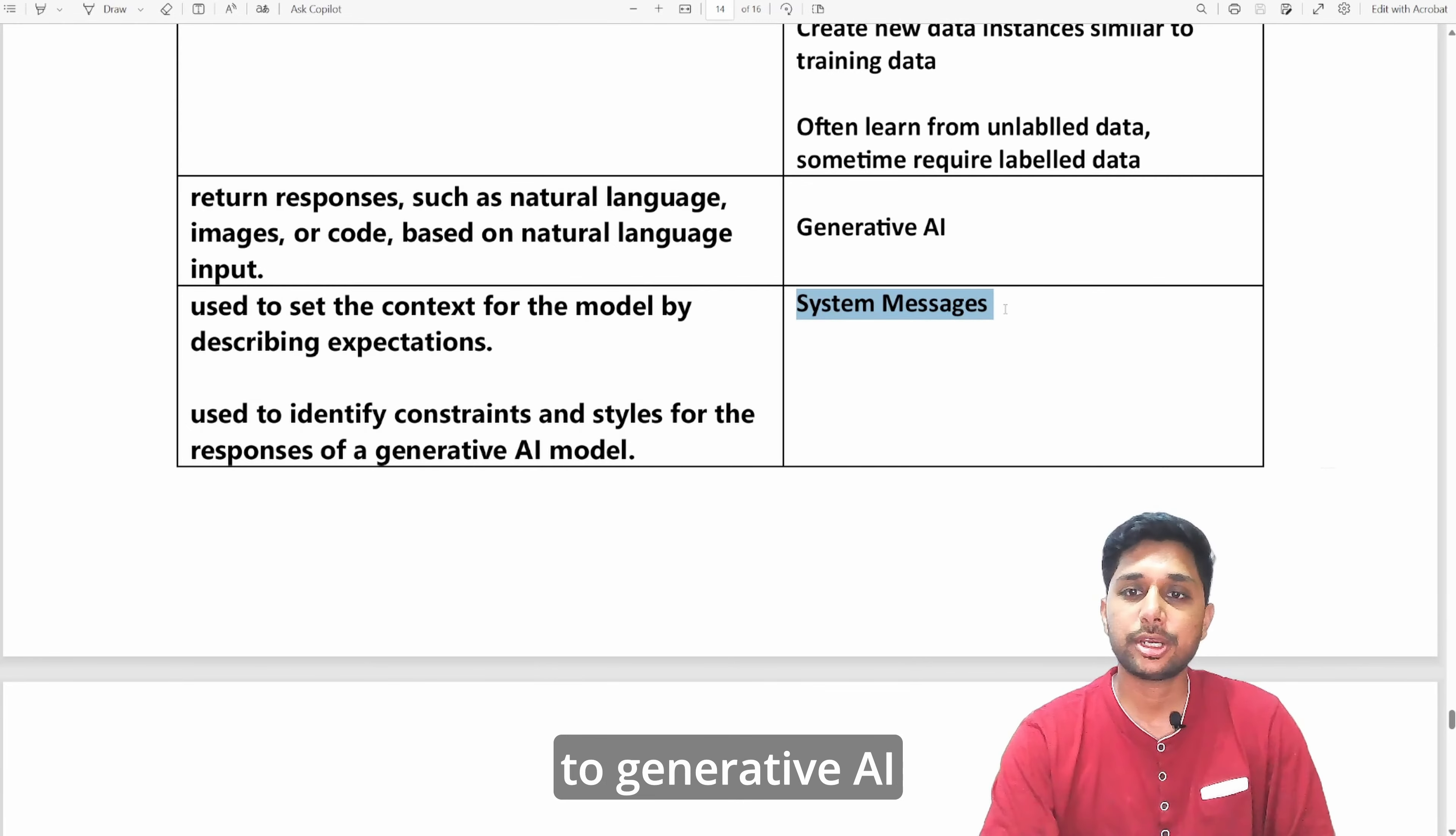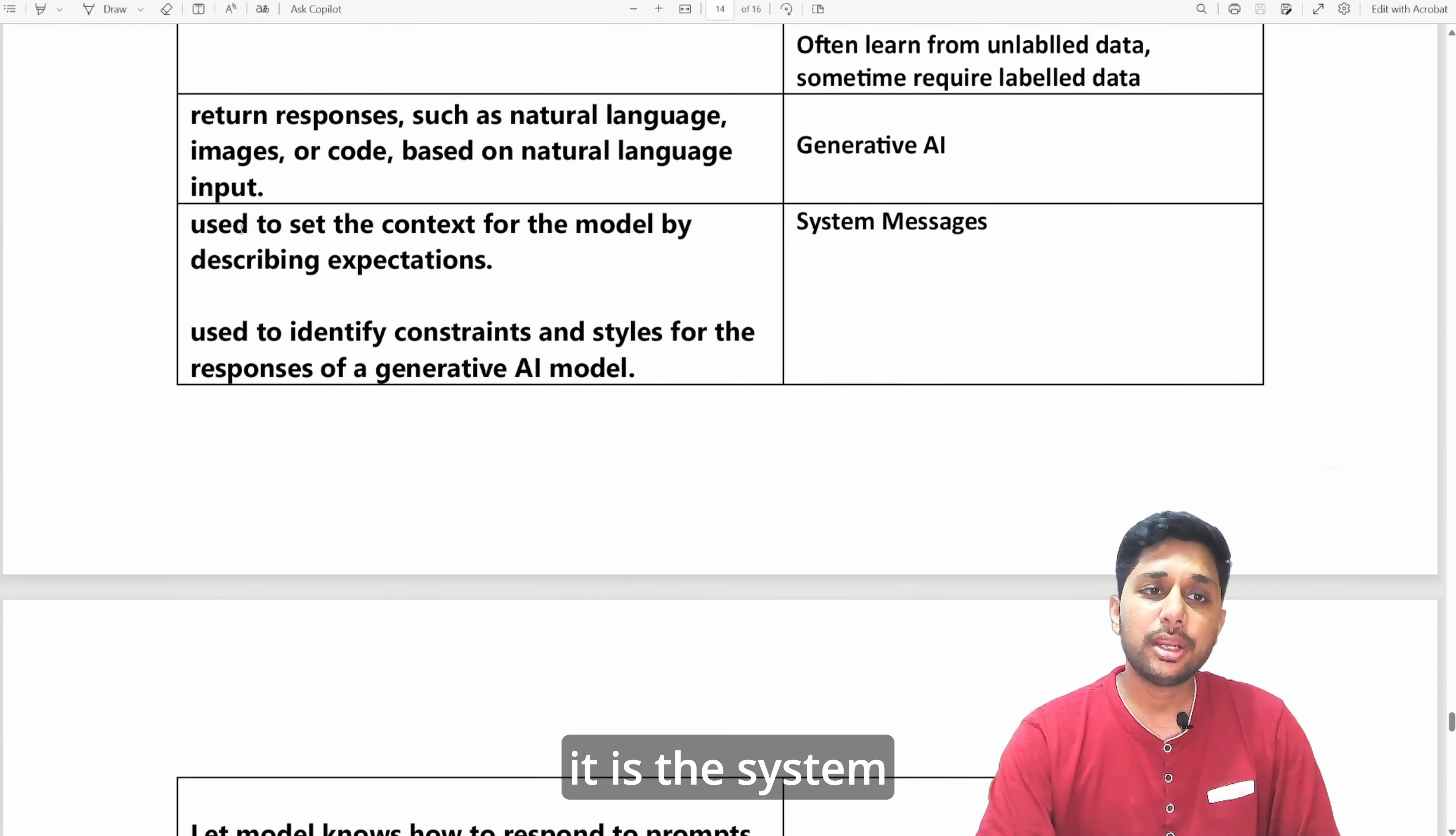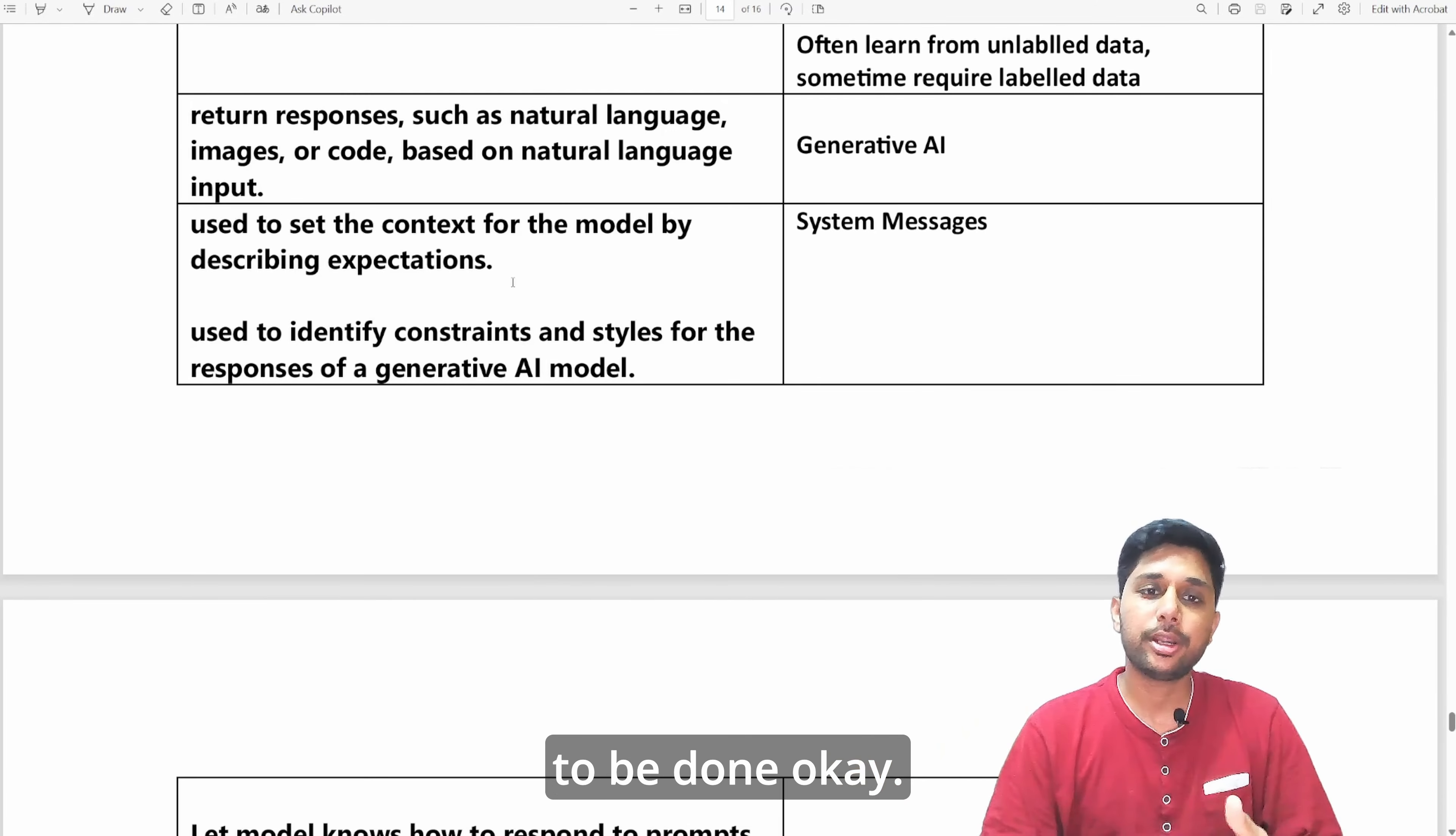Another important keyword in respect to generative AI is system messages. System messages are used to set context for the model by describing expectations. Basically here we are telling what you need to do, what generative AI needs to be done.